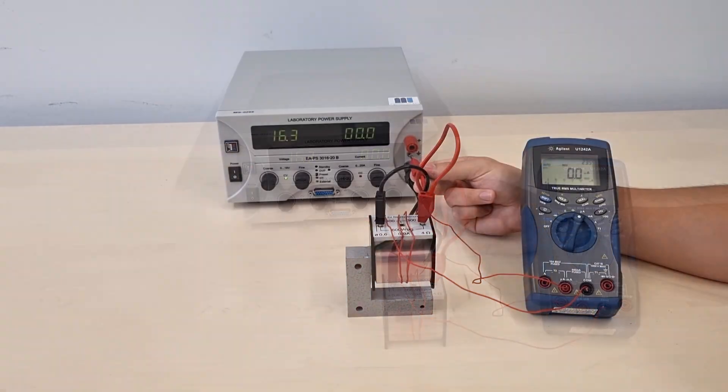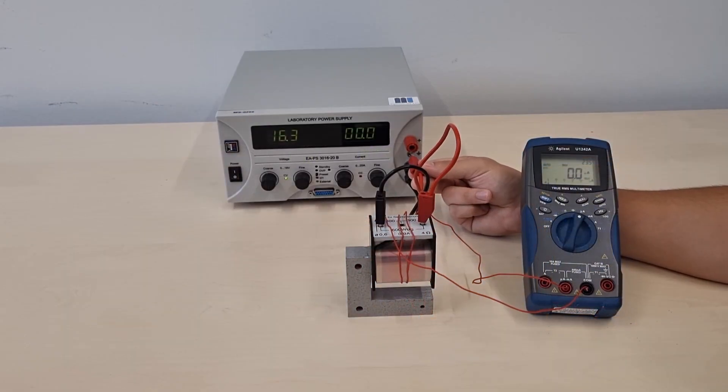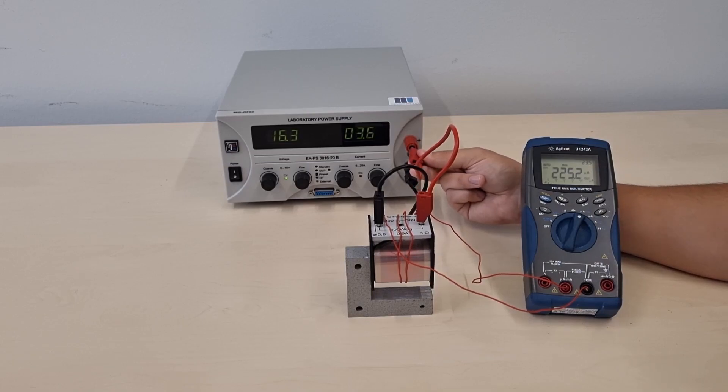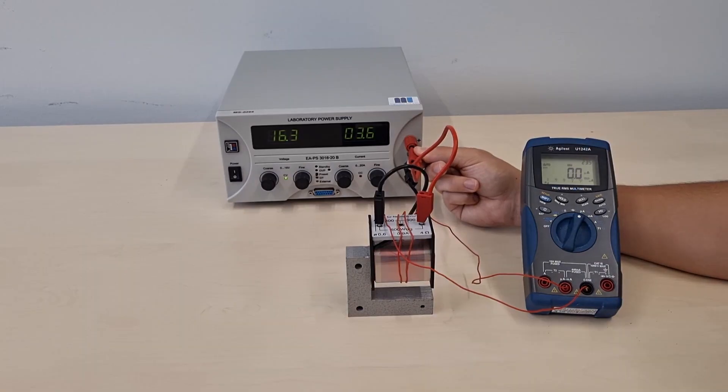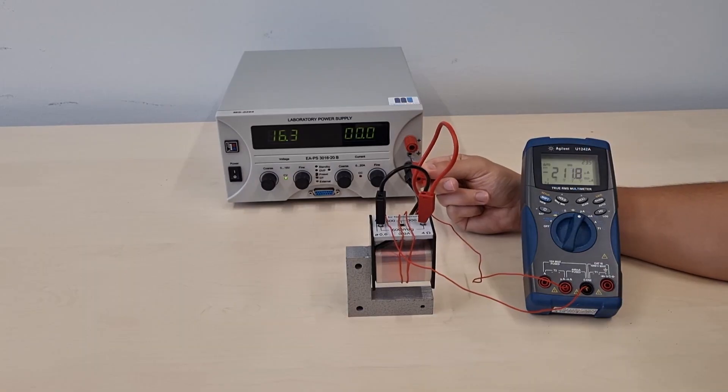As promised we finally show what effects an iron core can have on the induced current. As a consequence of the iron core we have an increased magnetic field, so that the induced current increased from 30 microamps to over 200 microamps.